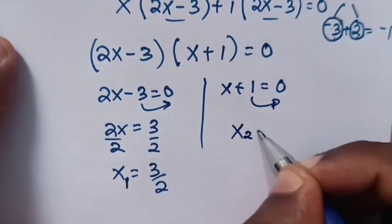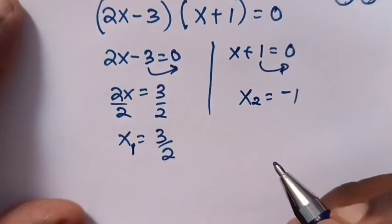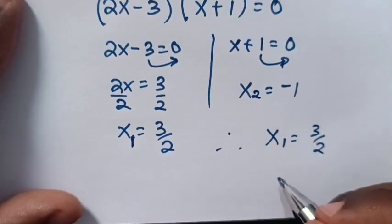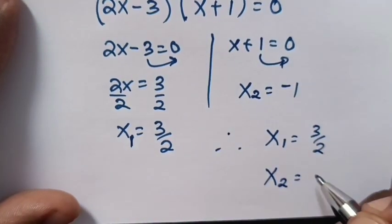In case 2, x₂ equals negative 1. Therefore, x₁ equals 3 over 2, and x₂ equals negative 1.